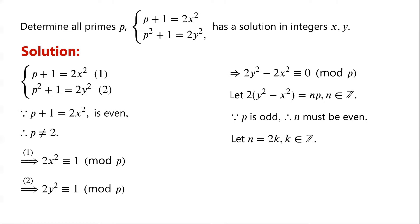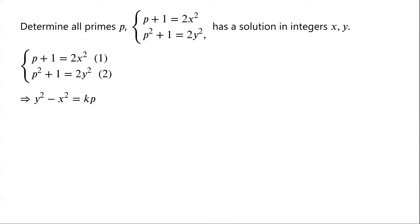We let n equal 2k where k is an integer. Substituting n equals 2k, we have 2 times (y squared minus x squared) equals 2kp. Dividing by 2, we have y squared minus x squared equals kp. This can be written as (y minus x)(y plus x) equals kp.